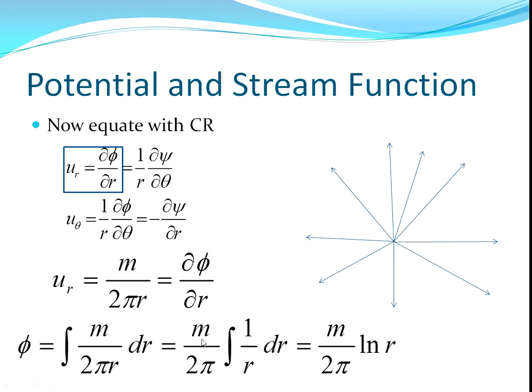You can take the m over 2π out. That's simply a constant. Some textbooks will just call m over 2π some letter. And then, obviously, the integral of 1 over r dr is just ln r. So you've got the potential function as a constant times ln r.